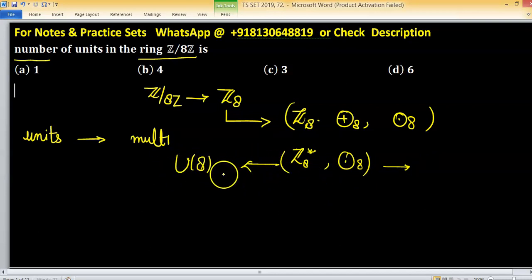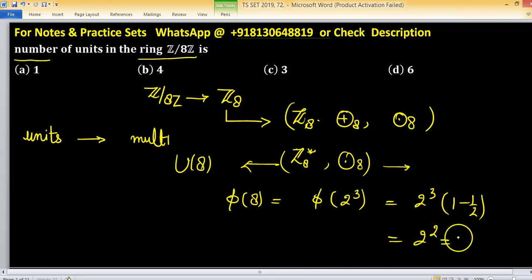This is nothing but U8 and number of elements in U8 will equals to phi 2 cube. Equals to 2 cube into 1 minus 1 upon 2. So 2 square equals to 4.